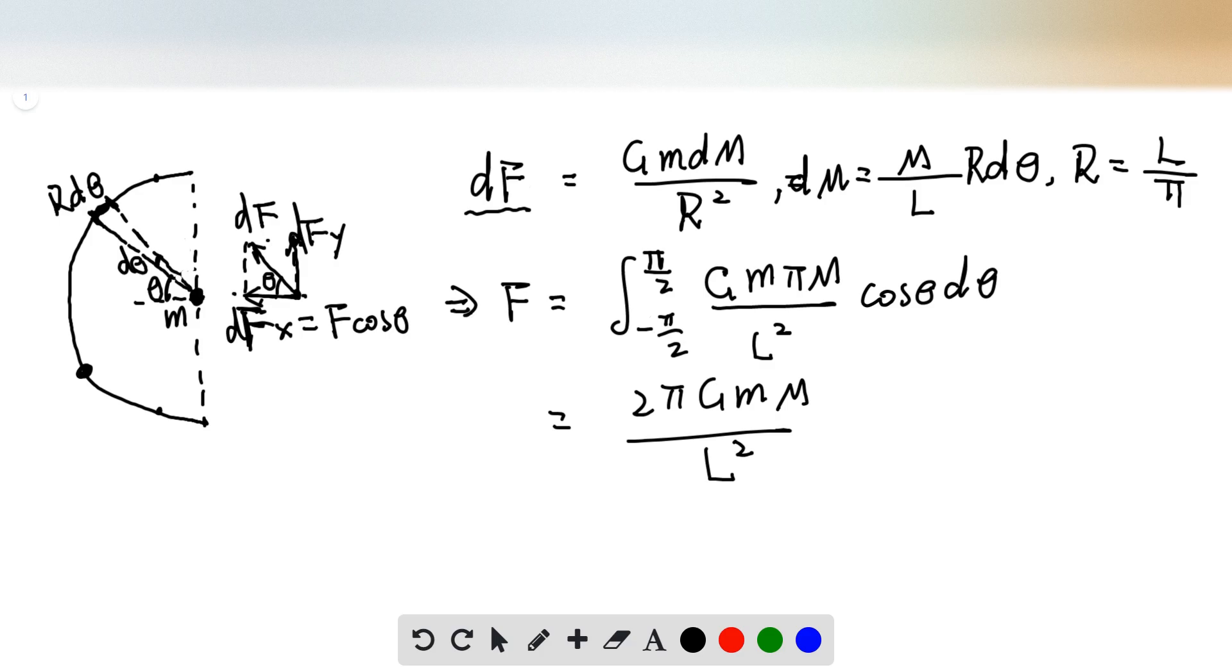So now we take the integral of the df to find the net force, right? So we have g small m, we plug in dm into here, and we plug in R into here, we have Fx equal to g small m pi capital M divided by L squared. There is the total length of the rod here. And times cosine theta because we're only looking for its x component. We don't care about its y component, it gets canceled.